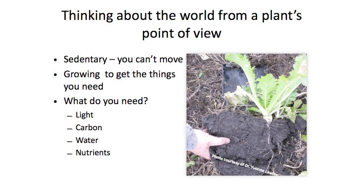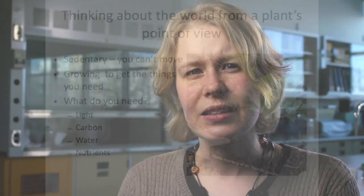It can also help us identify the problems and challenges the plants are facing out in the landscape around us. Let's start by considering life from a plant's point of view. Plants are sedentary organisms, meaning they can't move. They need to grow to get the things that they need. In general terms, the resources that they need are light, carbon, water, and nutrients. The next question is, where do plants find their resources in the environment?